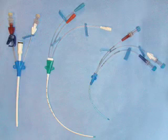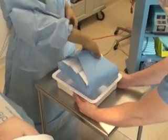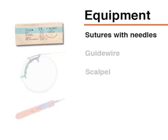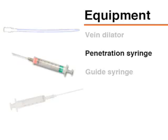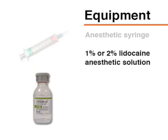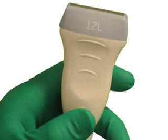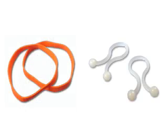Central venous catheters vary in size, length, and number of infusion ports, and the choice of catheter depends on the clinical circumstances. Commercially packaged catheterization kits are available and may include drapes, disinfectant sponges, gauze pads, sutures with needles, a guide wire, a scalpel, a vein dilator, a penetration syringe, a guide syringe, an anesthetic syringe, and 1% or 2% lidocaine anesthetic solution. Ultrasound machines with linear array, high-resolution vascular transducers are preferred, along with sterile transduction gel, an acoustically transparent sterile transducer sheath, and sterile rubber bands or clips to secure the sheath around the transducer.